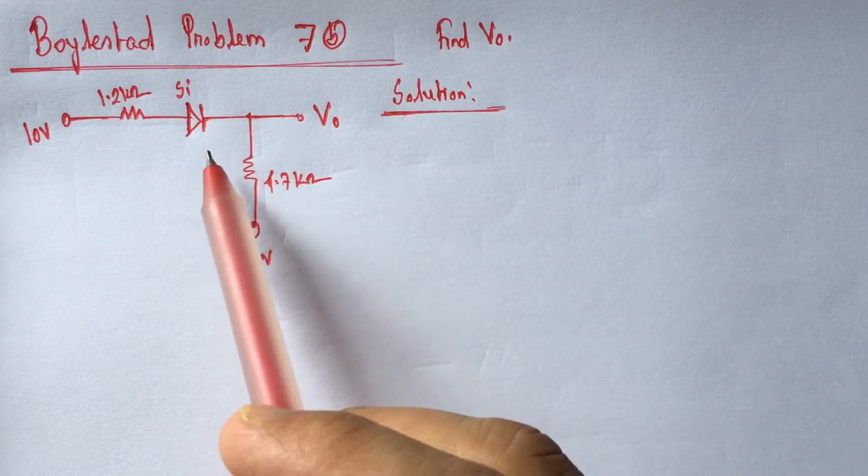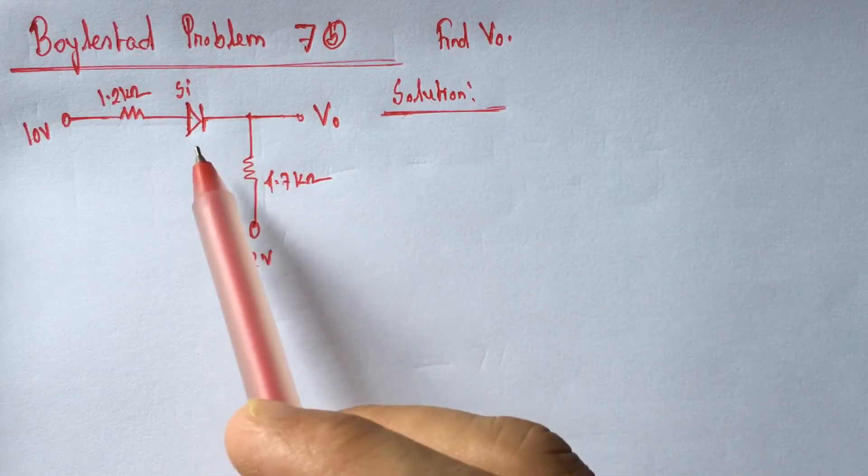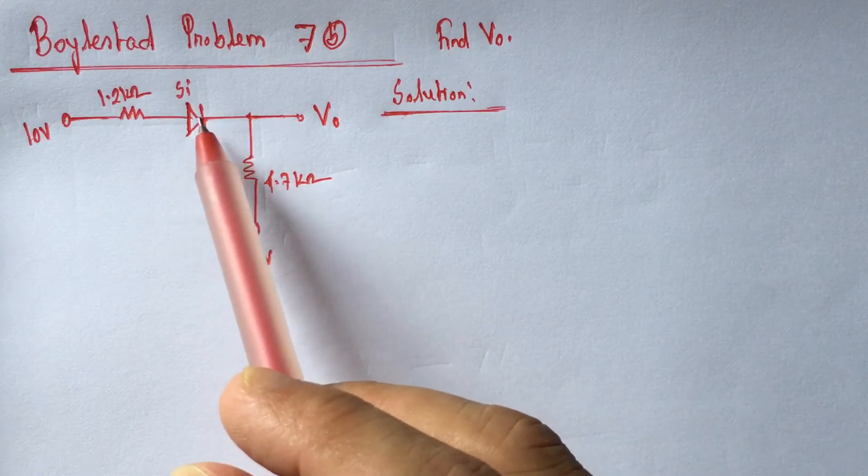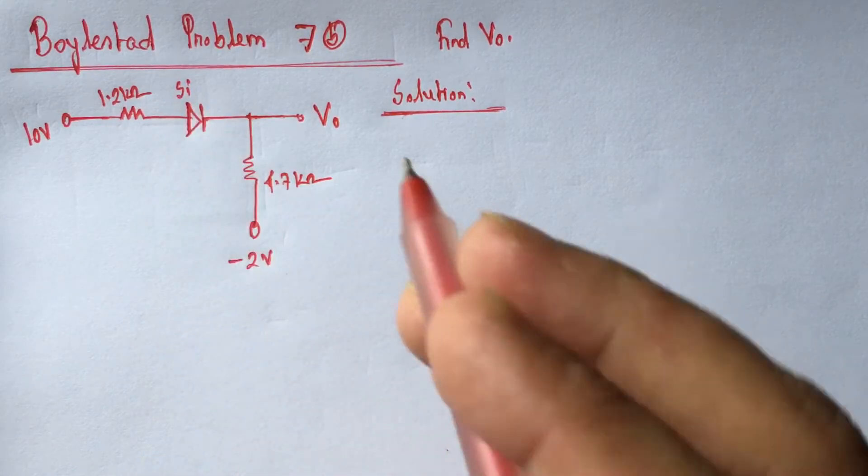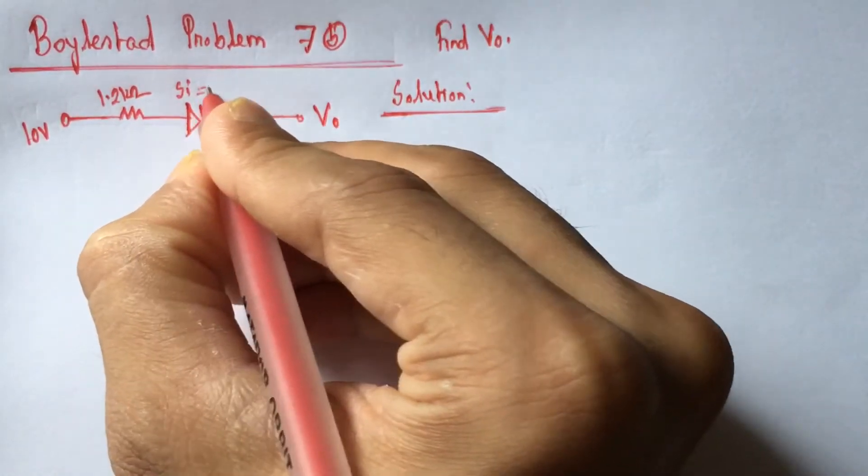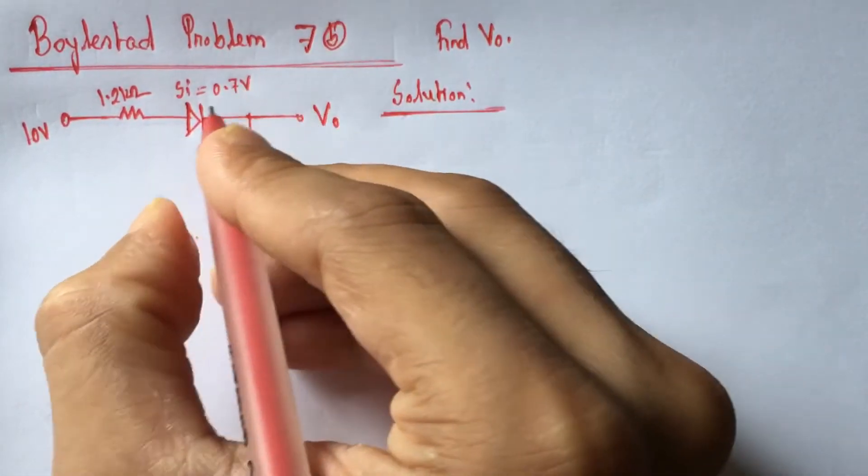For solving diode related problems, the first stage is to identify the state of the diode. Either the diode is on or off. This is a silicon diode and it has a voltage drop of 0.7 volt which is fixed.